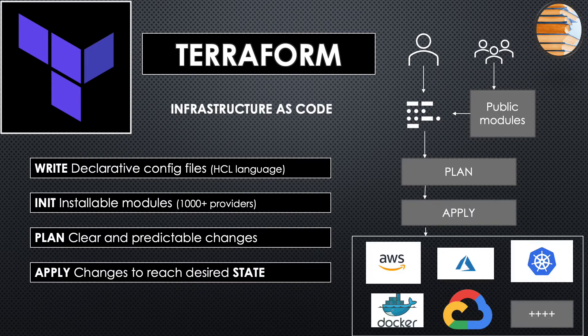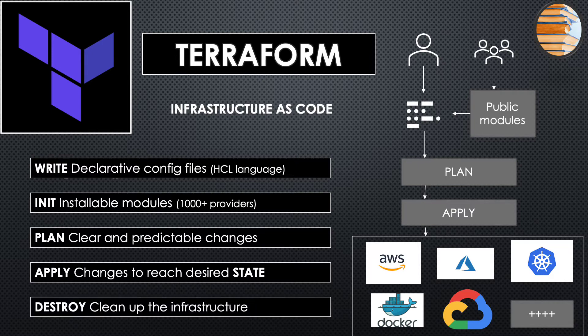Then you actually execute the plan by applying the changes. Terraform determines the changes by looking at the state file, which contains the current state of the infrastructure. You can even remove the infrastructure by running a destroy command. This is the whole lifecycle of Terraform. It's very useful as you can manage multiple clouds in a single place and it creates a repeatable configuration you can apply in various environments.